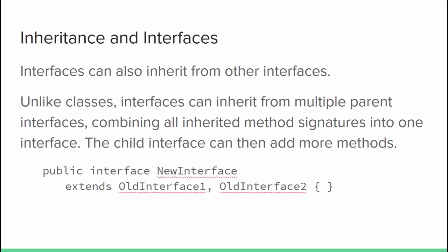Interfaces can also inherit from other interfaces, but unlike classes, interfaces can inherit from any number of parents. It simply combines all of the method signatures from all of the parents into one new interface, and the child interface can add additional methods if it wants to.